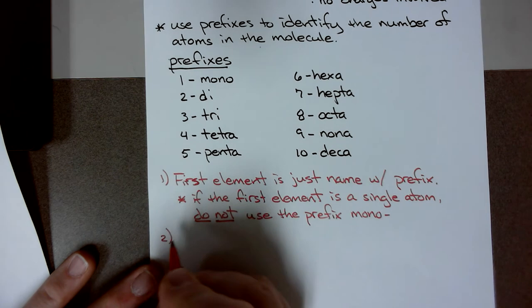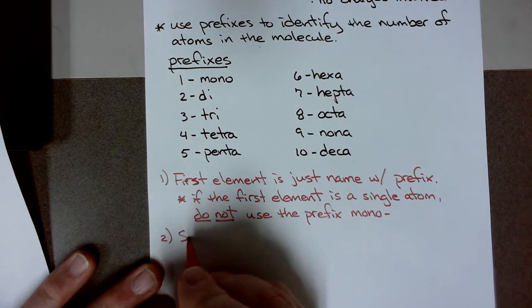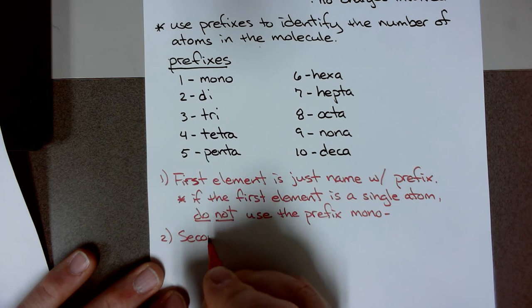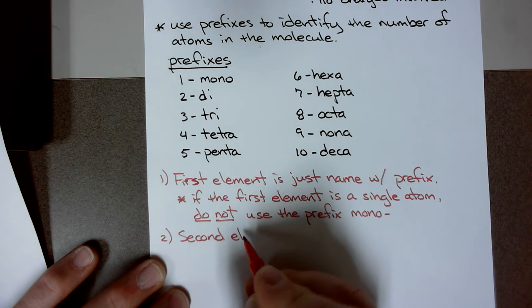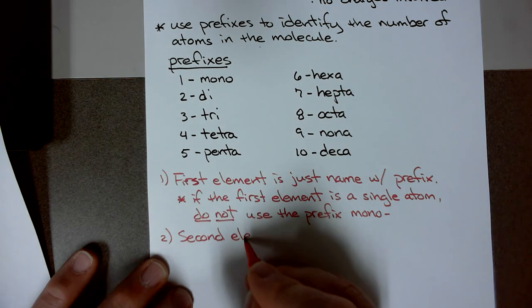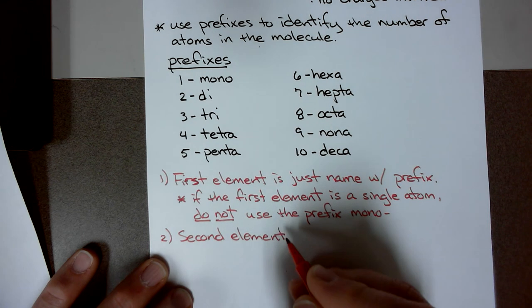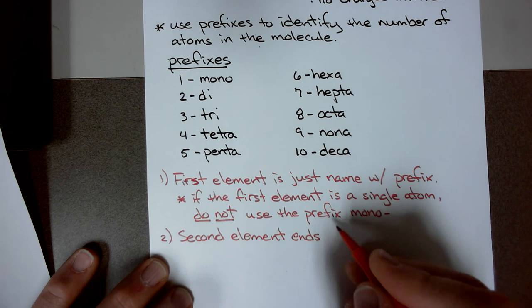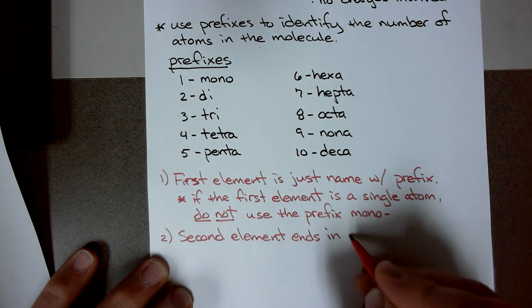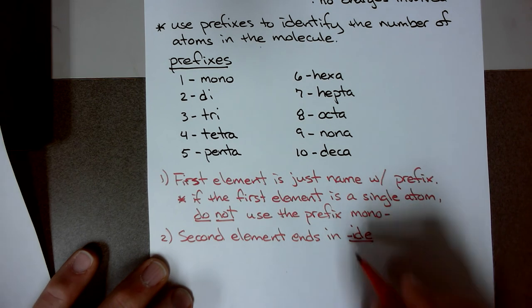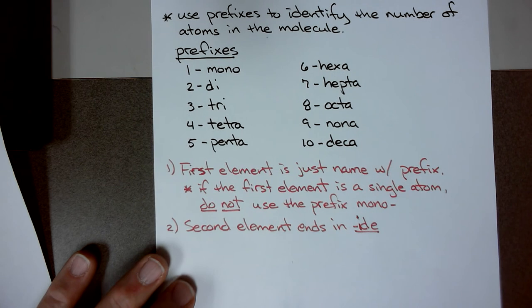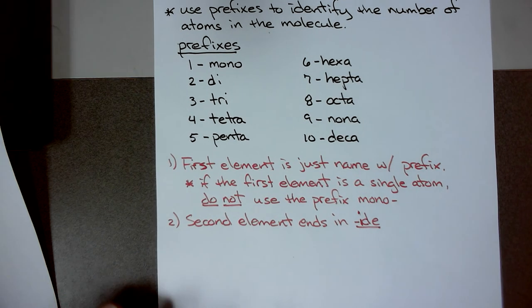Rule number two is that the second element ends in ide. Of course, you have to use the prefix to tell you the number of atoms, but the name ends in ide. I-D-E. Let's go over a couple of these and practice this.